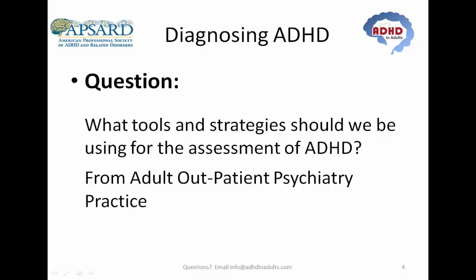I get a lot of referrals from primary care for evaluation of adult ADHD. Right now, in the waiting room, I give them the adult symptom report scale. They come in and I ask them more about symptoms and rule out anxiety and other things, but I was wondering if you'd recommend any other approaches or a different approach? So, suggestions around how to go about evaluating — what are some important pearls for evaluating the complaint? What kind of practice are you in? Adult outpatient psychiatry. Tools we should be using and strategies for the assessment. Dr. Goodman, you want to start?